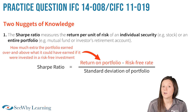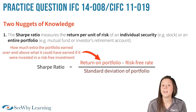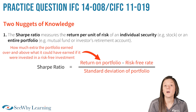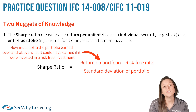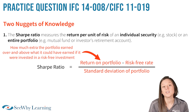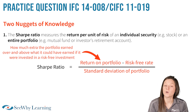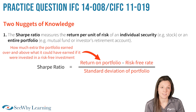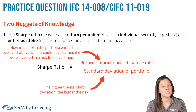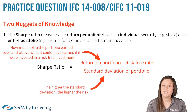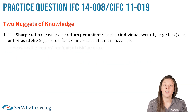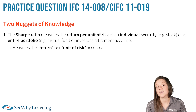a risk-free investment, such as a 90-day treasury bill? On the bottom of the formula, we find standard deviation, which is considered a measure of risk. For example, the more a security's return deviates from year to year, the more volatile it is and the more risk it represents. The higher the standard deviation, the higher the risk. So to sum up the Sharpe Ratio, it measures the return per unit of risk accepted.